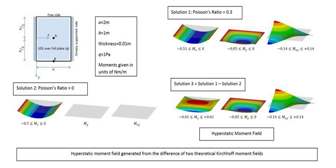Engineered structures are usually designed so that the maximum expected stresses are well within the realm of linear elastic behavior—the generalization of Hooke's law for continuous media—for the material from which the structure will be built. That is, the deformations caused by internal stresses are linearly related to the applied loads. In this case the differential equations that define the stress tensor are also linear. Linear equations are much better understood than nonlinear ones; their solution—the calculation of stress at any desired point—will also be a linear function of the applied forces. For small enough applied loads, even nonlinear systems can usually be assumed to be linear.